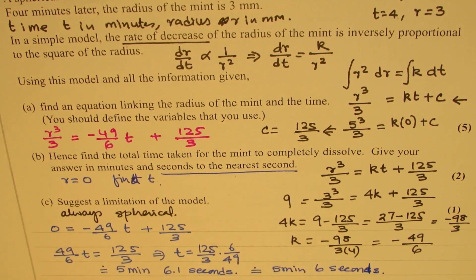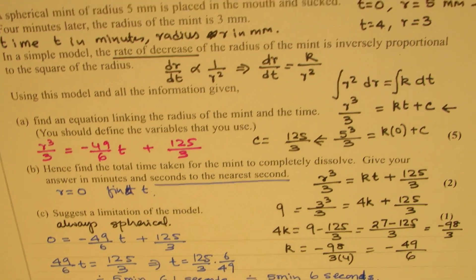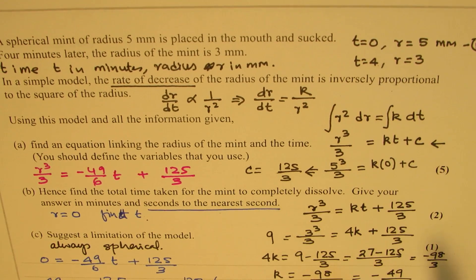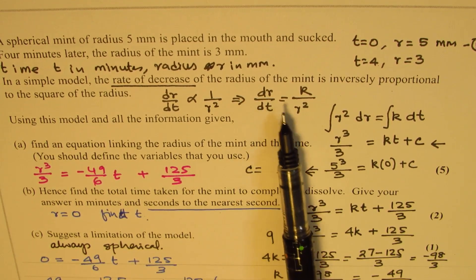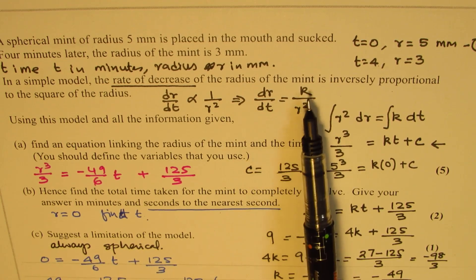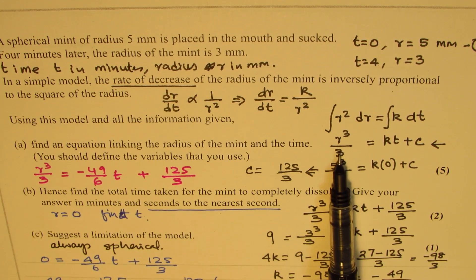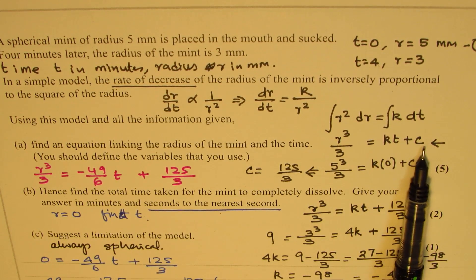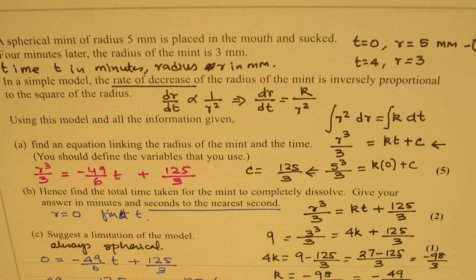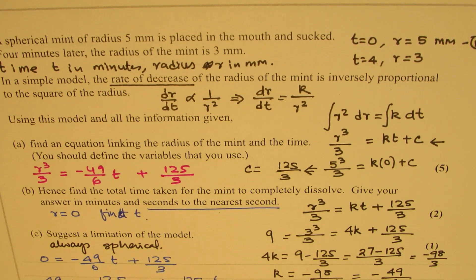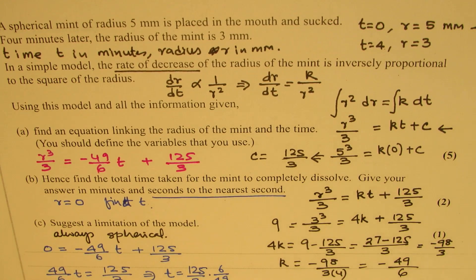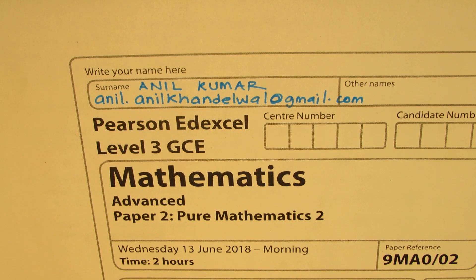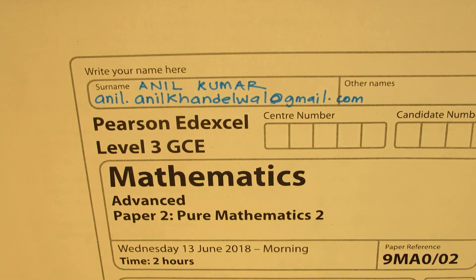From the given information, we decided that time is taken in minutes and radius in millimeters. The rate of change being inversely proportional gives dr/dt equals k over r squared. Integrating, we got the relation between r and t, and found the constants using the initial conditions. I hope the steps are absolutely clear. Feel free to write your comments, share your views, and if you like and subscribe to my videos, that would be great. Thanks for your time and all the best.